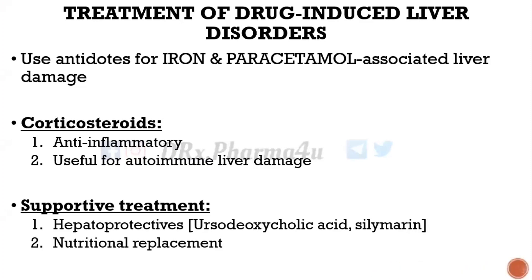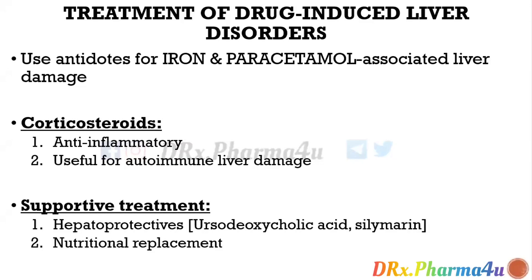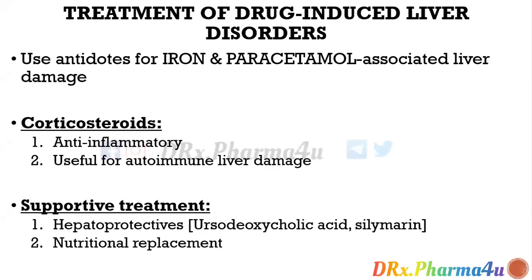If we come to the treatment of drug-induced liver disorders, we usually use antidotes for iron and paracetamol-associated liver damage. If it is iron-induced liver damage, we give antidotes such as desferioxamine, deferiprone, etc. When I start the toxicology series, I will talk about iron poisoning and paracetamol poisoning in detail. In paracetamol-associated liver damage, we usually use N-acetylcysteine, which is a very good antidote.